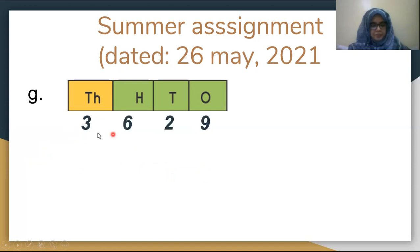Part G is 3629 plus 5267. 9 plus 7 is 16. Write 6 below and carry 1. 1 plus 2 is 3, 3 plus 6 is 9. 6 plus 2 is 8, and 3 plus 5 is 8. The answer is 8896.